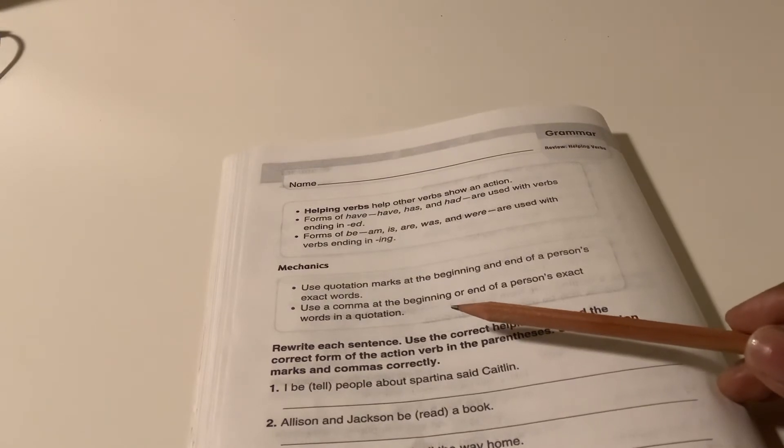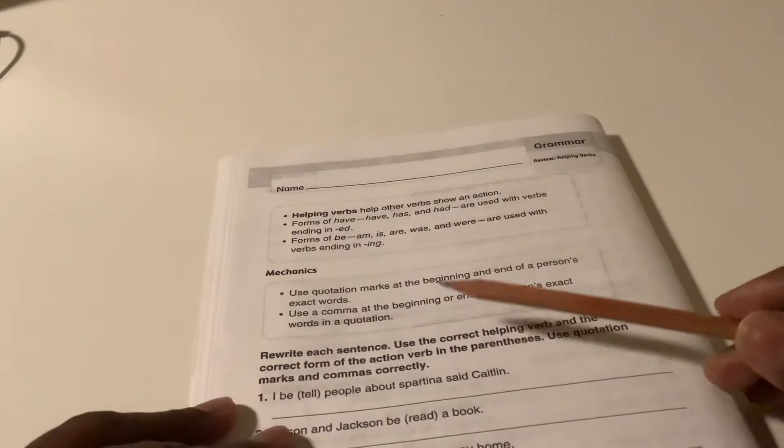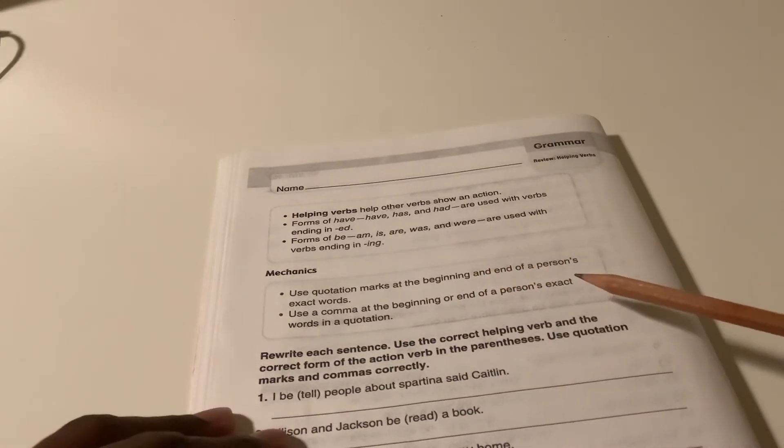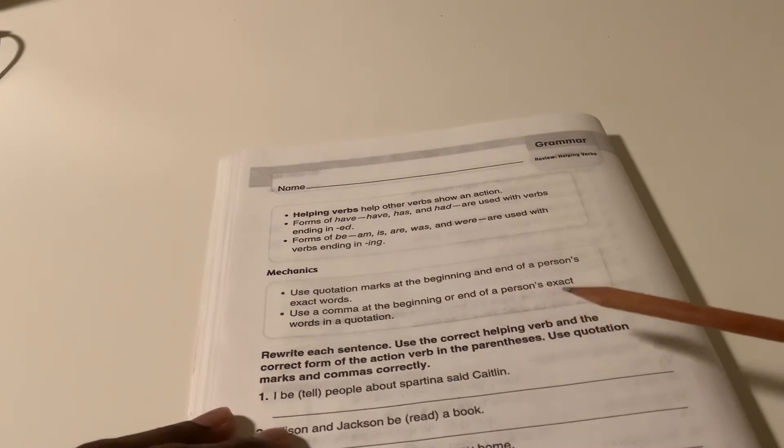Now, let's look at the mechanics. Use quotation marks at the beginning and end of a person's exact words. Use a comma at the beginning or end of a person's exact words in a quotation.